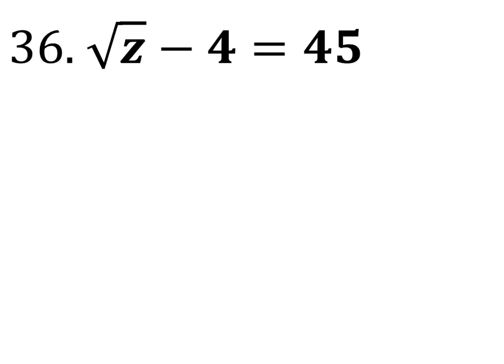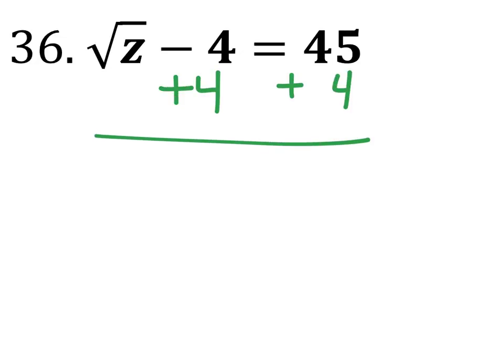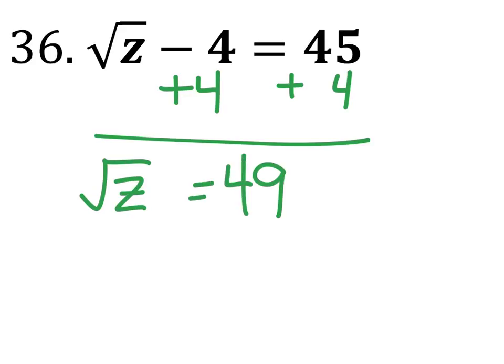All right, there were some questions on these as well. So on these, we need to add 4 to both sides. So now we have the square root of z equals 49.